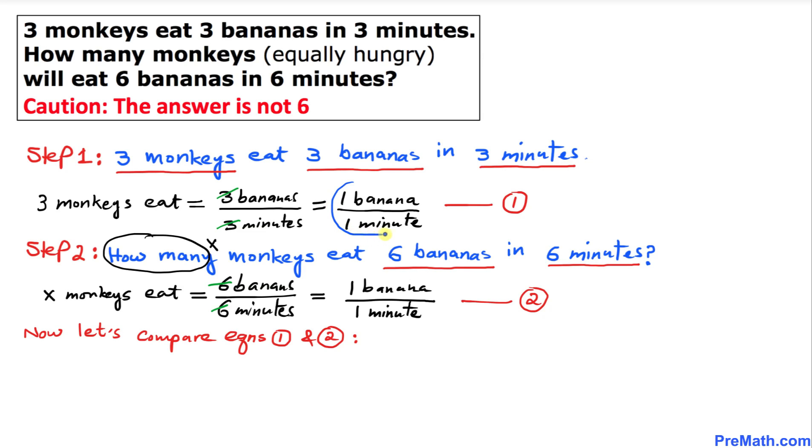Finally, let's go ahead and compare equations one and two. If you look at this, on the right-hand side, this part and this part are the same, aren't they? They are the same: one banana in one minute. If the right-hand sides are the same, then the left-hand sides must be the same.